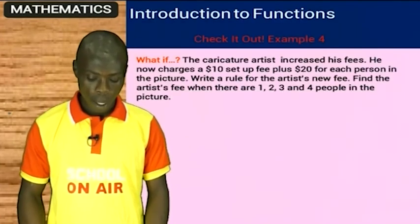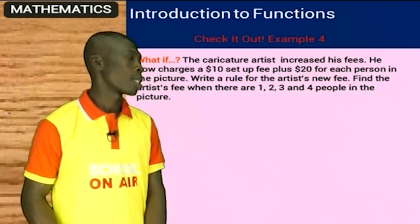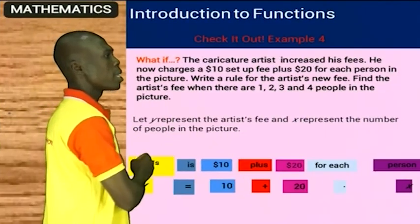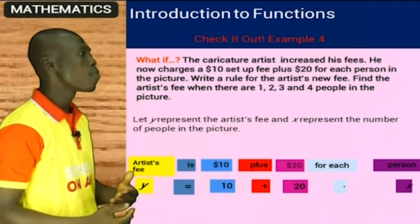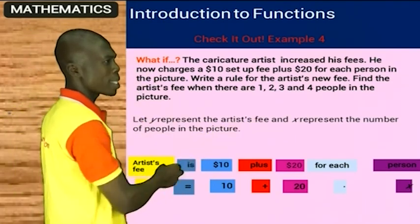In that particular episode, we're looking at functions. Let Y represent the artist's fee and let X represent the number of people in a picture. We can have a schematic diagram of what that looks like.